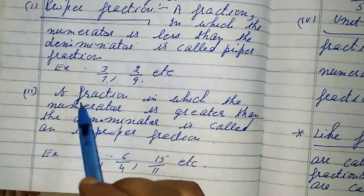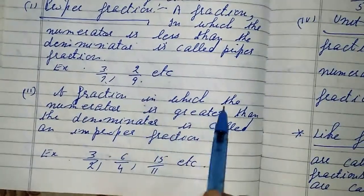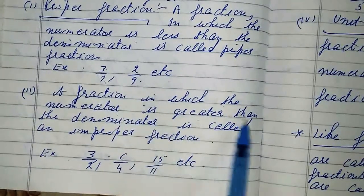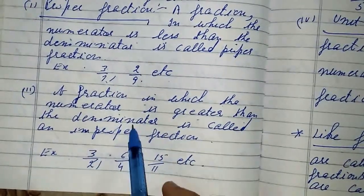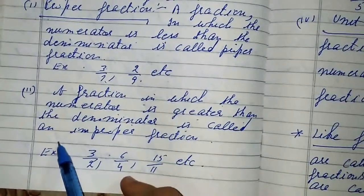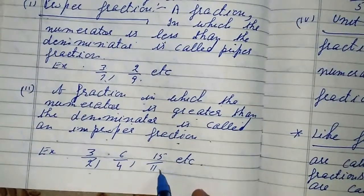Improper fraction. Next, a fraction in which the numerator is greater than the denominator is called an improper fraction.